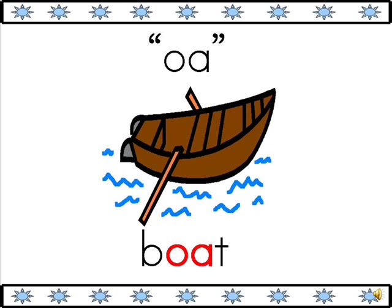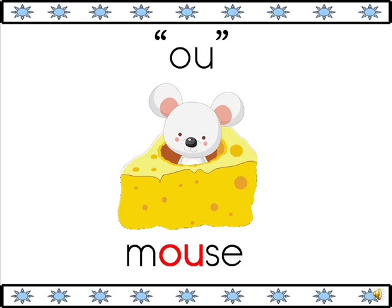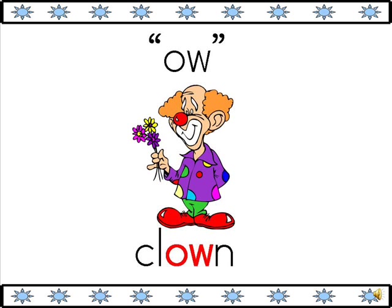The OA makes the O sound you hear in boat. The OW makes the O sound you hear in bow. The OU makes the OW sound you hear in mouse. The OW also makes the OW sound you hear in clown.